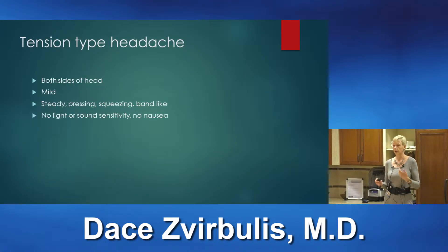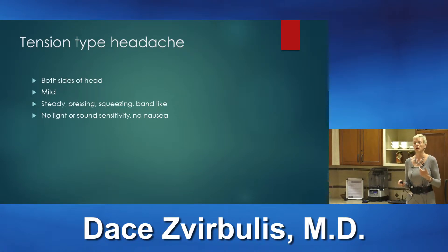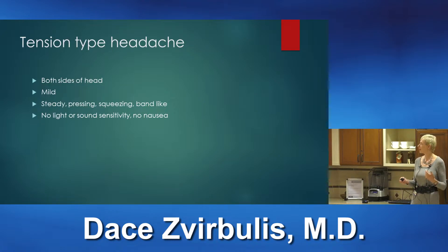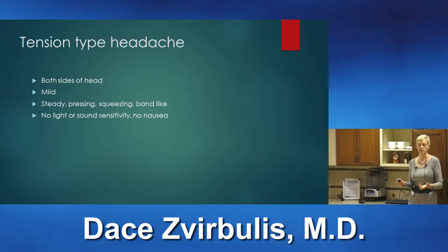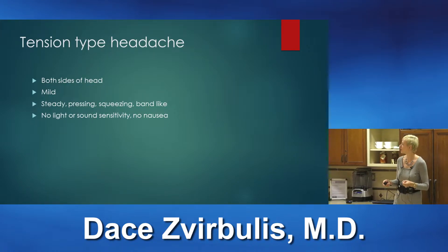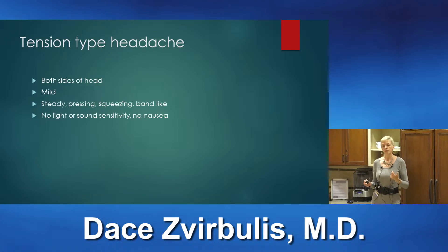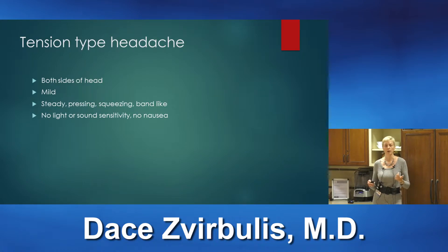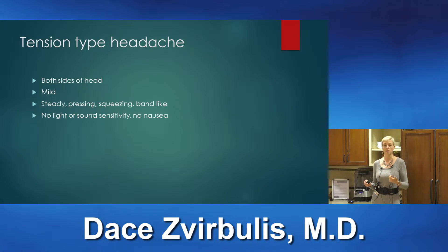Tension-type headache, the most common primary headache disorder, usually affects the whole head on both sides with mild to moderate, steady, pressing, band-like squeezing pain. Some people say it feels like a tight cap on their head. Usually people don't have much sensitivity to light or sound, don't feel nauseated, and most of the time can still go on with their daily activities.